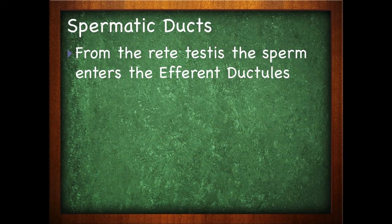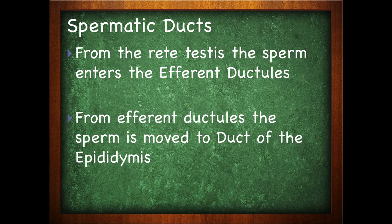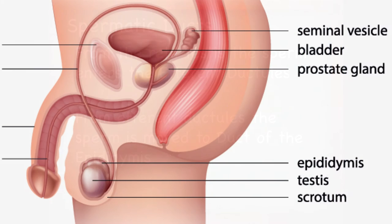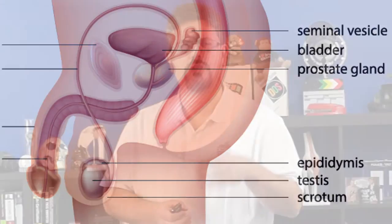Just because sperm are created doesn't mean that they're mature — they're going to go through a maturation process as they move through the ducts. From the rete testes, the sperm will enter what we call the efferent ductules. From the efferent ductules, the sperm is moved to the ducts of the epididymis. The epididymis is the site of sperm maturation and storage — that sounds like a good test question. On your test, you might be asked where sperm are produced and where sperm are matured. Sperm are matured and stored in the epididymis.